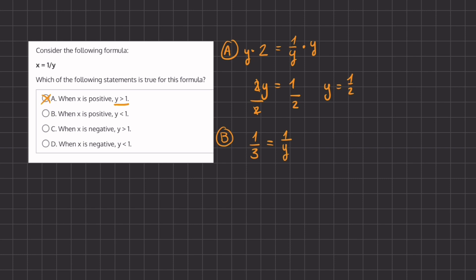As you can tell here, y is going to equal 3, and therefore this option is also going to be eliminated, because they are stating that y is going to be less than 1. So, this statement is not necessarily true, and therefore it will also be eliminated.